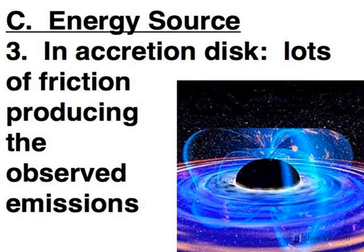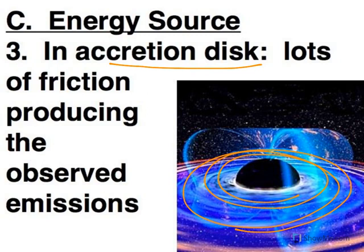As material falls into a black hole, it spirals towards the black hole in the accretion disk. As it does that, it's producing friction because you have material right next to other material falling in. You're getting stuff rubbing against each other as it falls inward, and that friction is generating heat and energy.